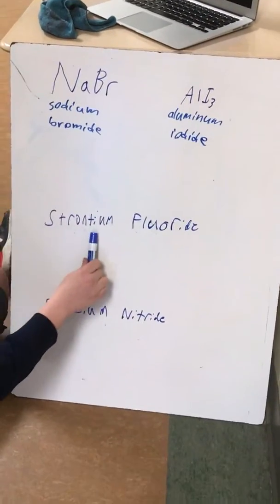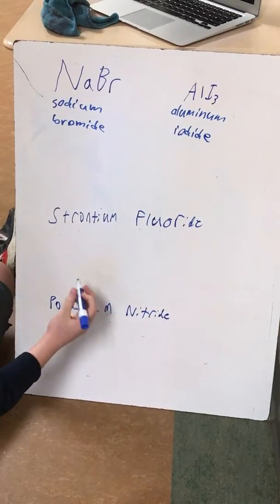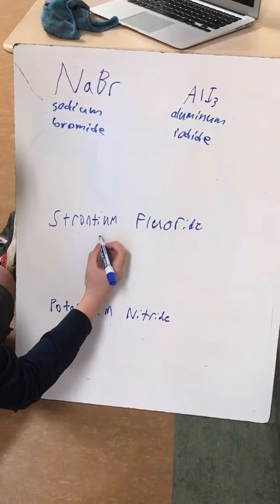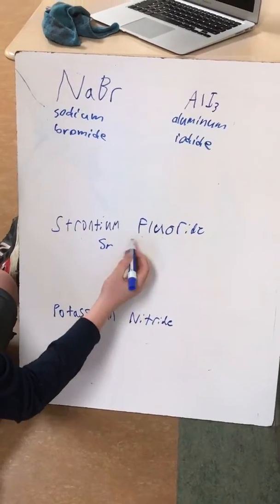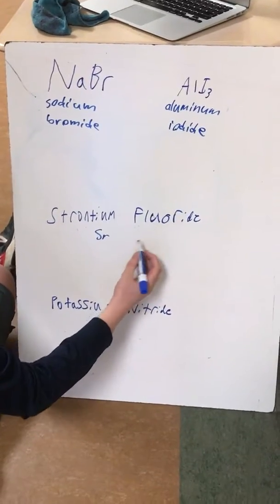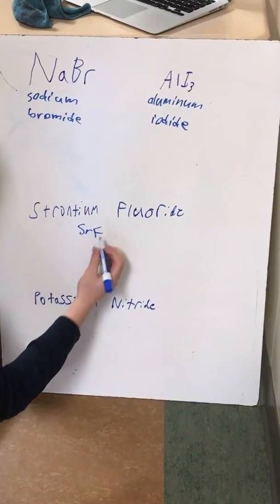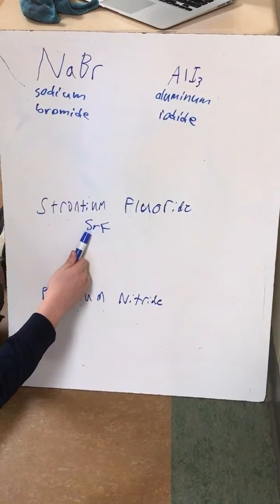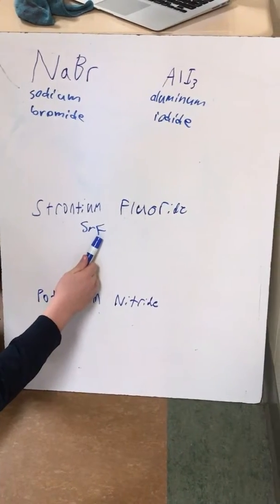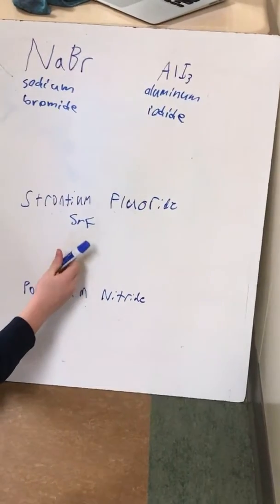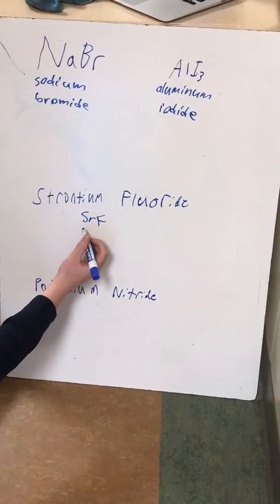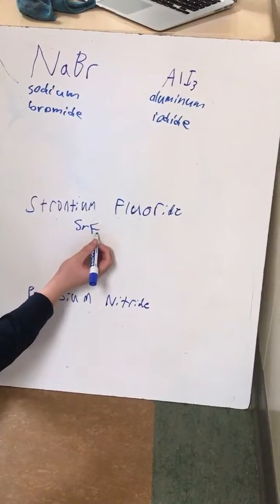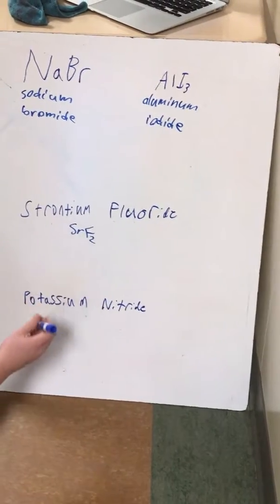Here we have strontium fluoride. Strontium is Sr and fluorine is F. Since strontium has a charge of +2 and fluorine has a charge of -1, we'd have to balance the charges. So this would be +2 and we'd have to have two of these for it to be the same.